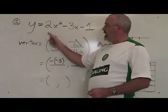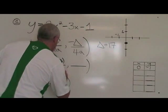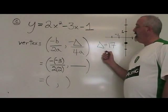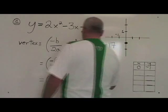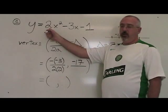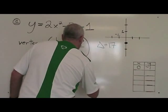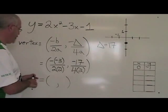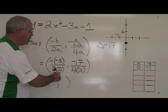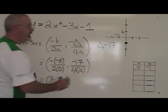a is 2, so 2a is 2 times 2. Our delta is 17, so negative delta is negative 17. a is 2, so 4a is 4 times 2. The negative of negative 3 is positive 3, and 2 times 2 is 4, so our x coordinate is 3 over 4. Our x coordinate is 3 quarters.